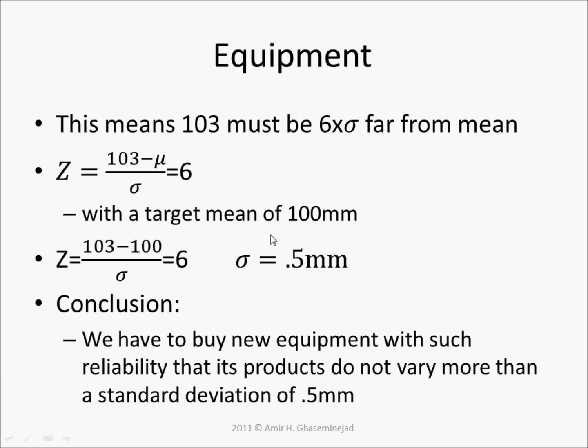That means the standard deviation should be 0.5 millimeters. The conclusion is that we have to buy new equipment with such reliability that the products do not vary more than a standard deviation of 0.5 millimeters.